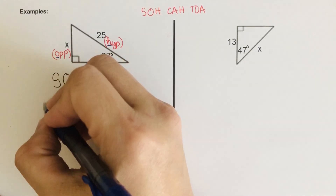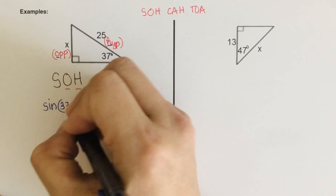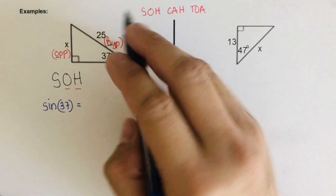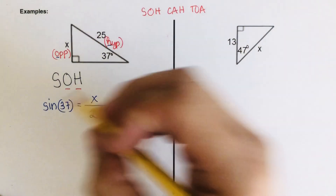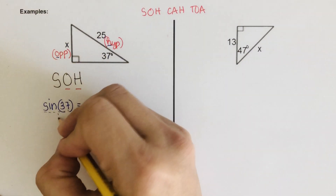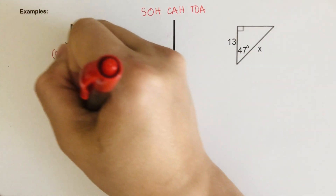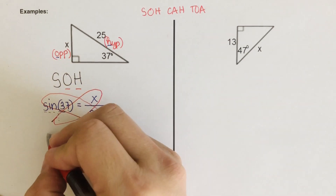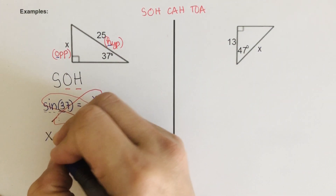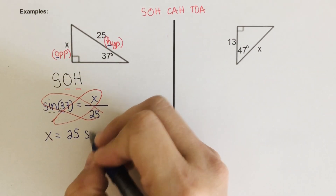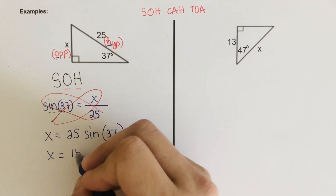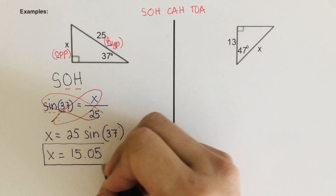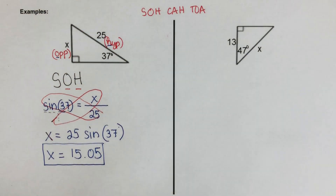We set up our equation: sine of 37 degrees equals opposite over hypotenuse, which is X over 25. With an invisible denominator of one, we cross multiply: X equals 25 times sine of 37 degrees. Using the calculator, this gives us 15.05. That is the length of the opposite side from 37 degrees. Did you get 15.05 as your answer to the second one?